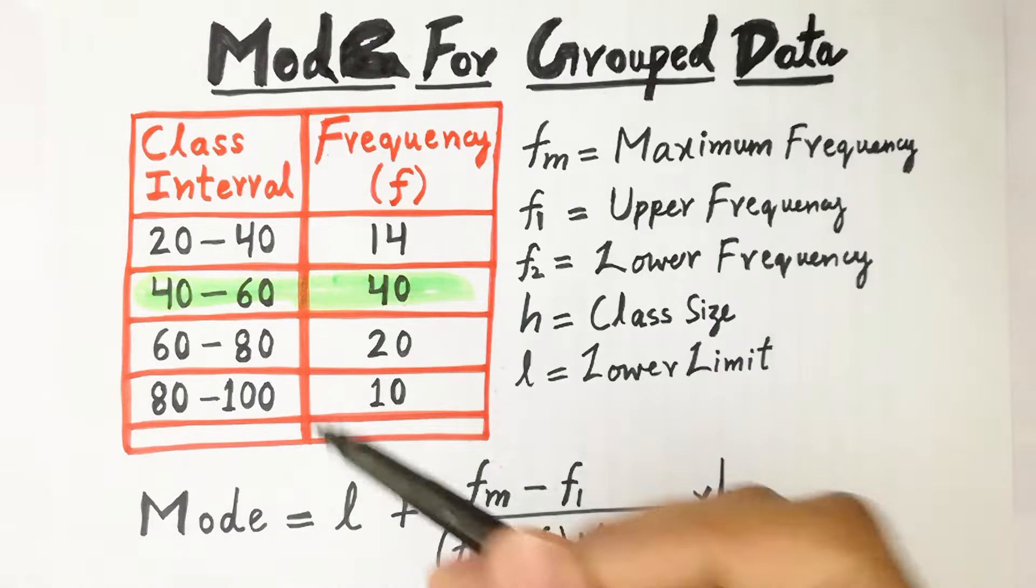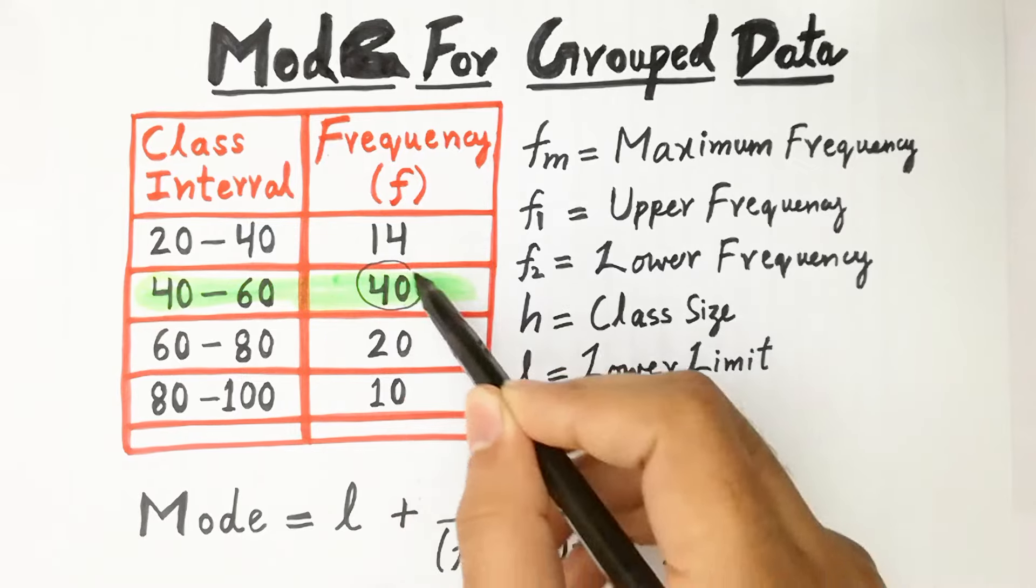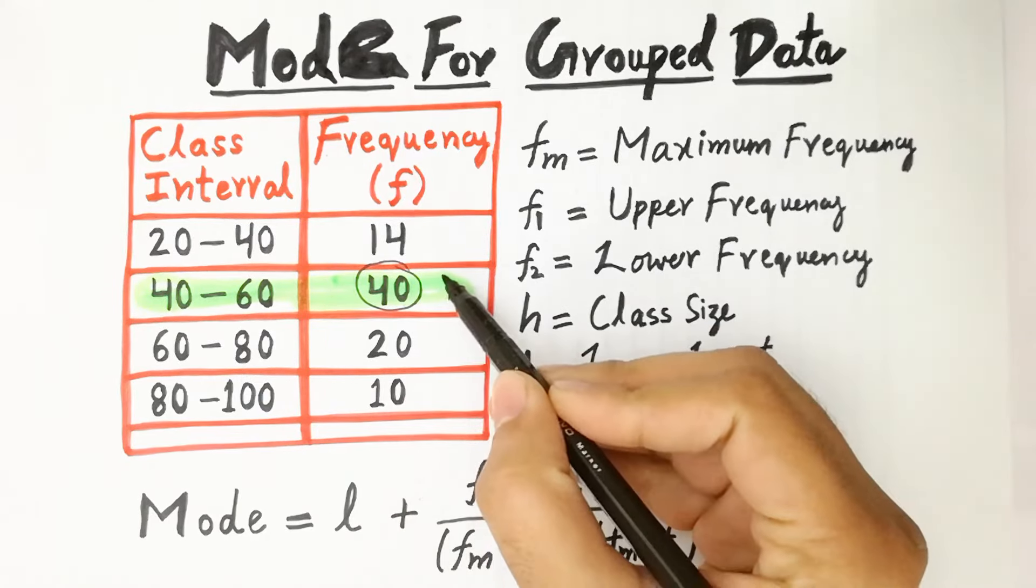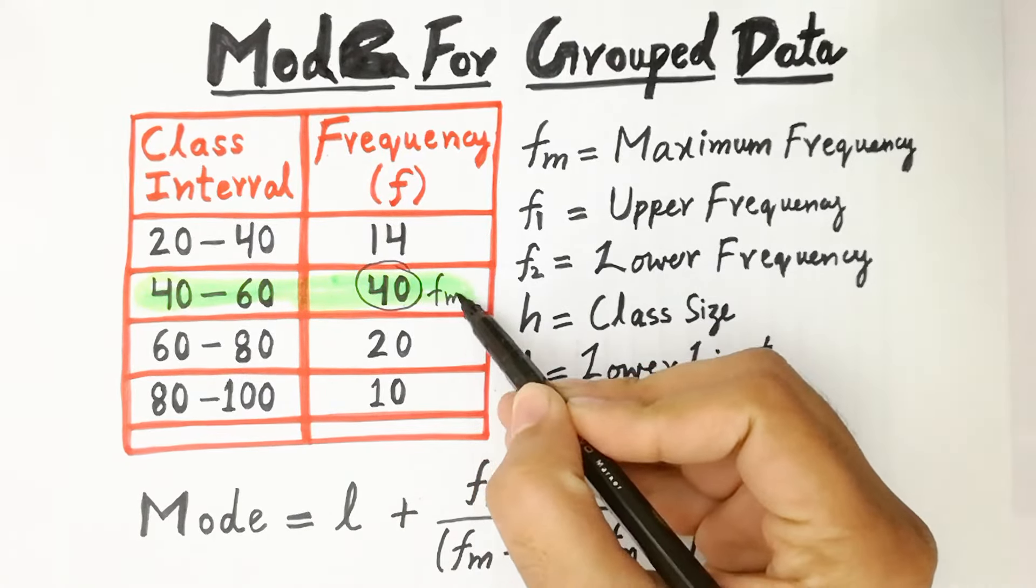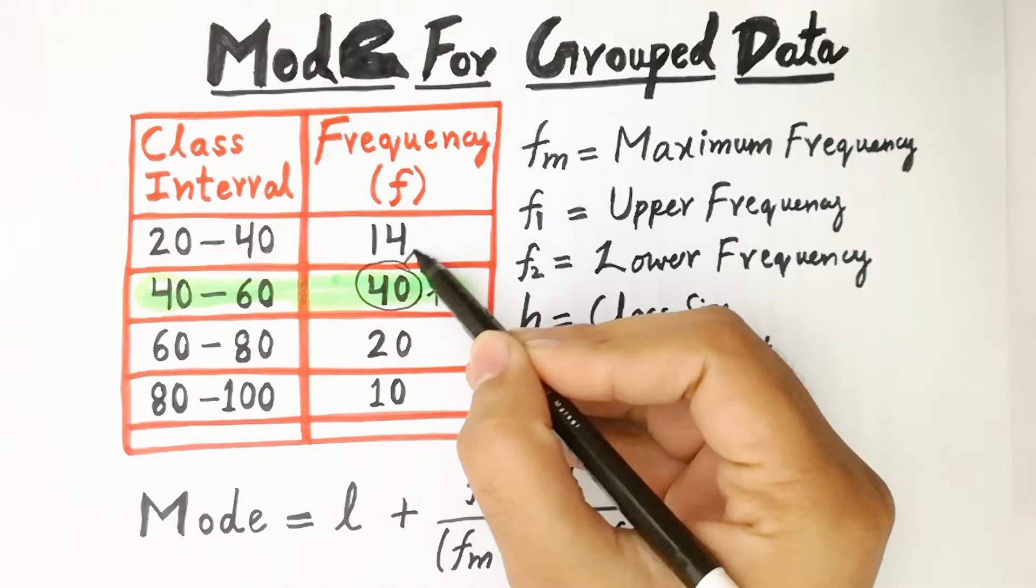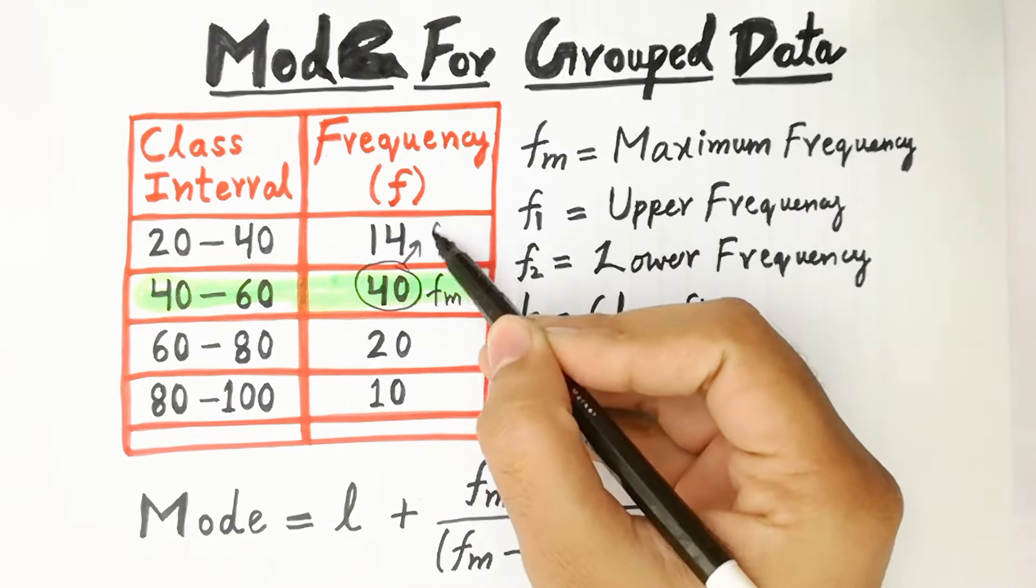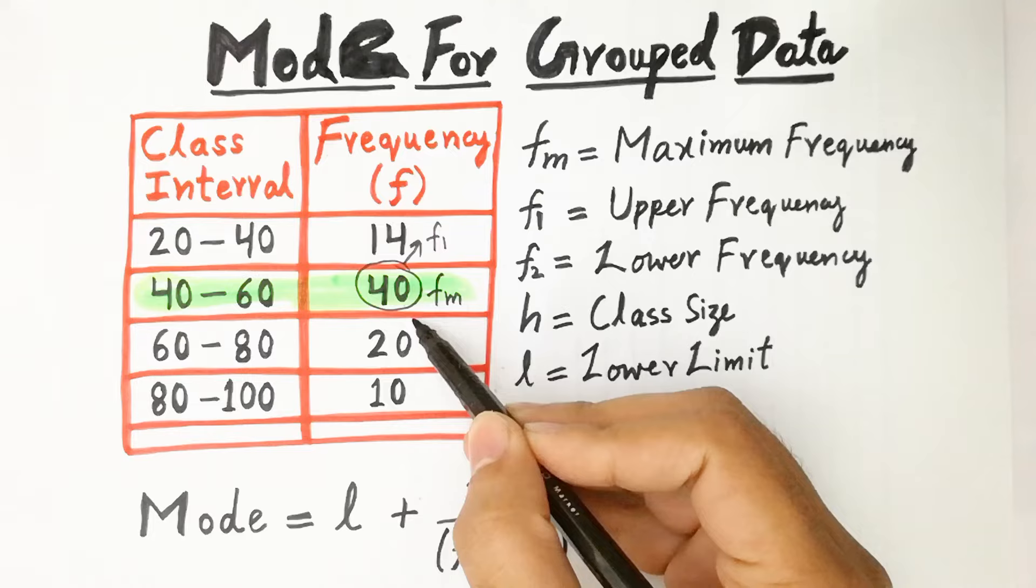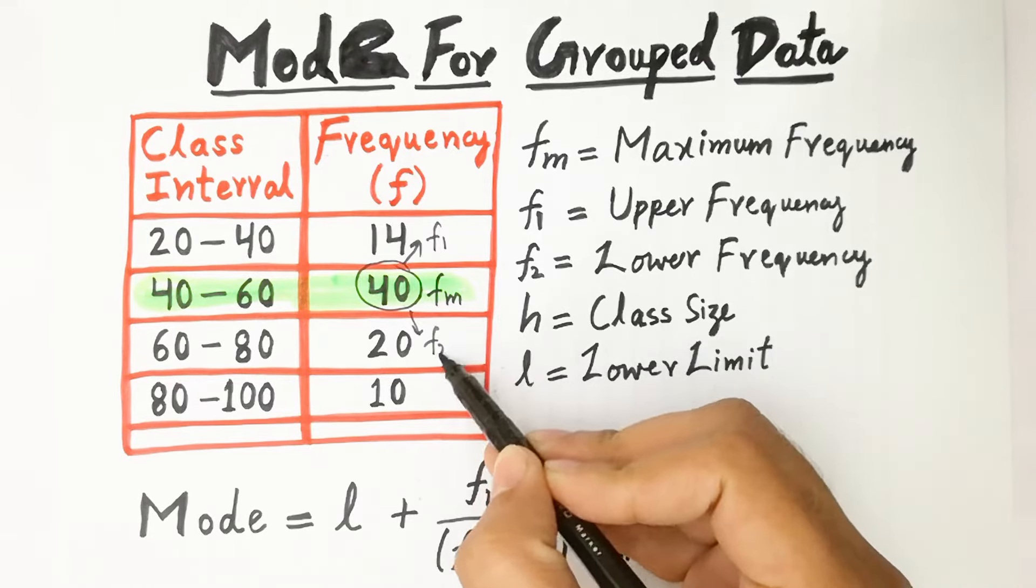Fm is 40, the Fm value of yours, maximum frequency. And upper value is the F1 and lower value is the F2.